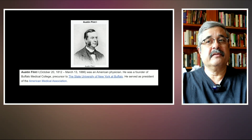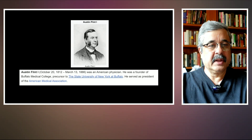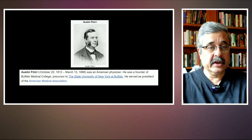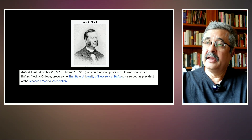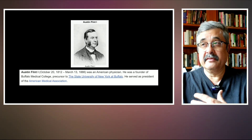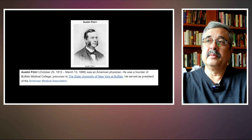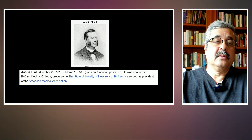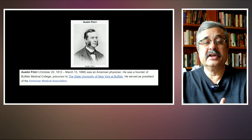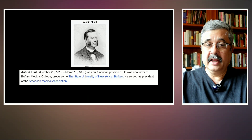Dr. Austin Flint was a 19th-century American physician born in Massachusetts who later lived in New York and was the founder of the Buffalo Medical College, a precursor of the State University of New York at Buffalo. He was also president of the American Medical Association, and in 1862, while working in Buffalo as professor of medicine, he described this diastolic murmur — similar to the murmur of mitral stenosis but differentiated by the absence of an opening snap. The Austin Flint murmur results from the regurgitation jet striking the anterior mitral leaflet, leading to high-frequency fluttering of the mitral valve.